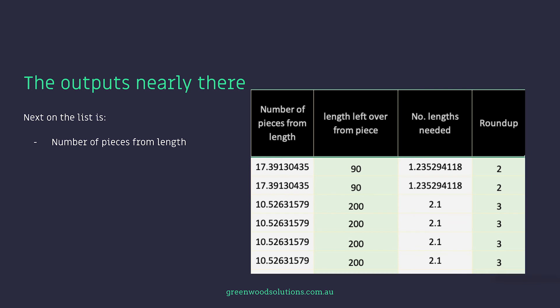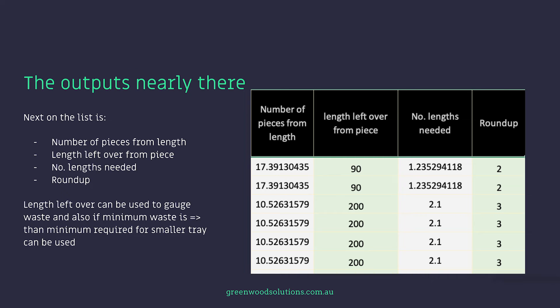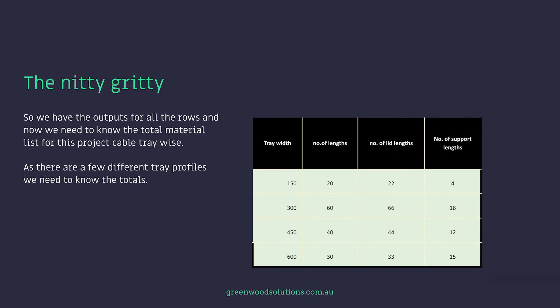The outputs are nearly there. Next on the list is the number of pieces from length, the length left over from the piece, the number of lengths needed, and round up. Length left over can be used to gauge waste, and also if the minimum waste is equal or greater to the minimum required for the smaller tray — say 150mm — it can be used. So we have the outputs for all the rows, and now we need to know the total material list for this project cable-wise.